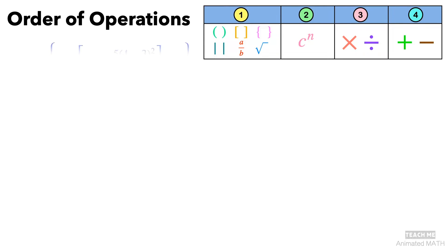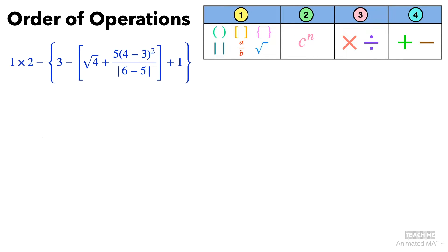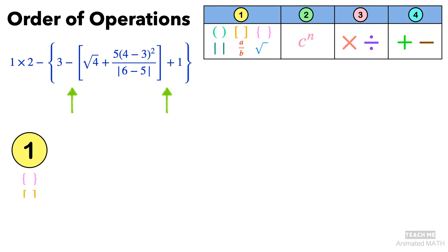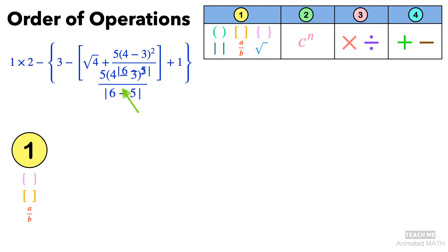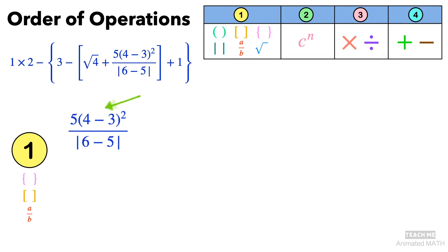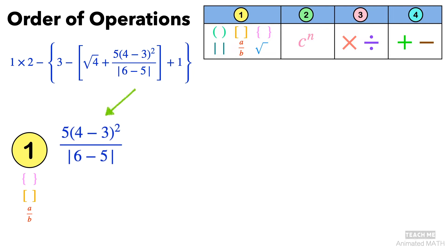Let's try an example. Following Step 1, we start with the innermost grouping and work our way outwards. This fraction is the innermost grouping, so we need to simplify it first.